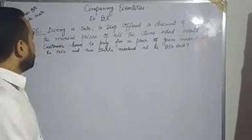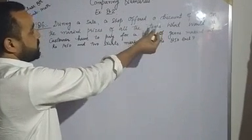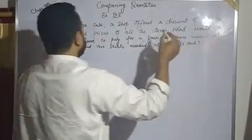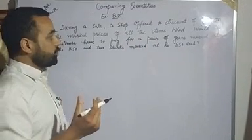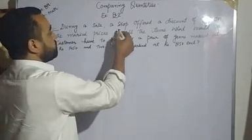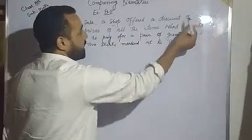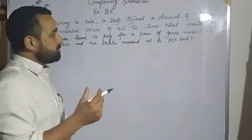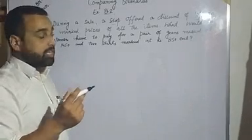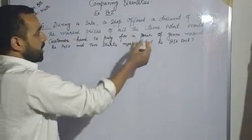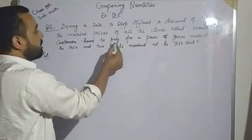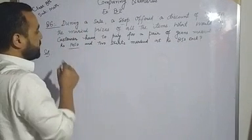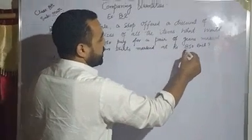We are doing comparing quantities, exercise 8.2, question number 7. During a sale, a shop offered a discount of 10% on the market prices of all the items. What would a customer have to pay for a pair of jeans marked at rupees 1450 and two shirts marked at rupees 850 each?